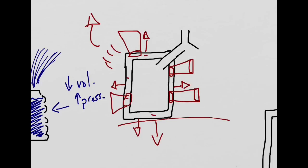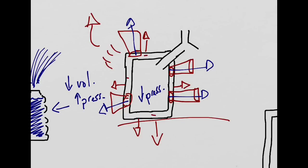This negative pressure causes a pull on the lung itself, very similar to what you've probably felt when you've tried to move a glass upward on a wet table. This pull causes the lung box to get larger. As the volume increases, the pressure will decrease to 759 millimeters of mercury. When you compare that to the atmospheric pressure on the outside of 760 millimeters of mercury, the air will get pushed into the lung.